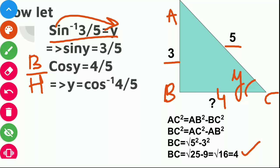So base is 4 and hypotenuse is 5. So cos y will become 4 by 5. When cos will move to that side, it will become y is equal to cos inverse 4 by 5.